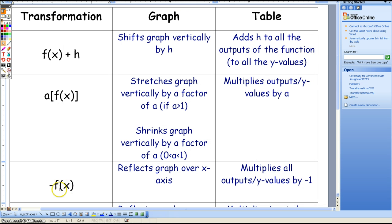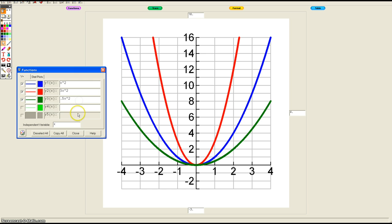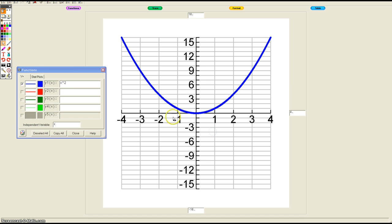And then the last one: negative f(x). This tends to confuse some students, so I'm just going to broaden my window here. I'm going to make this go down to negative 16.